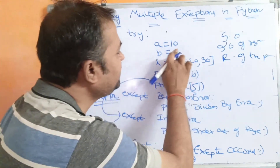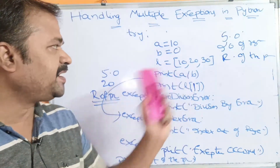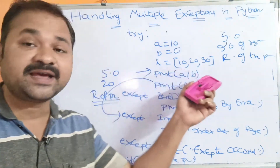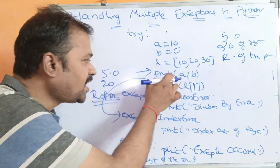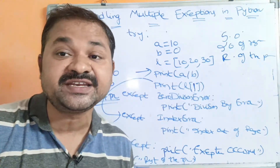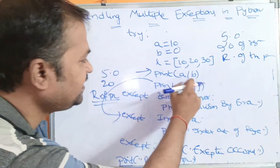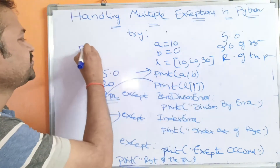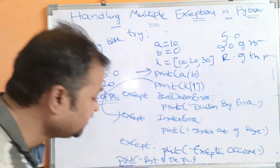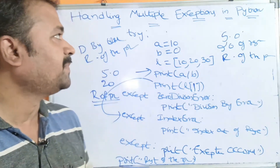Now let's set b=0 and access L[1]. When print(a/b) executes, 10/0 causes a ZeroDivisionError exception. The control goes to the except block handling ZeroDivisionError and we get 'division by error' as the message. Control then exits all except blocks and 'rest of the program' is printed. This is how we can handle multiple exceptions in Python programming.